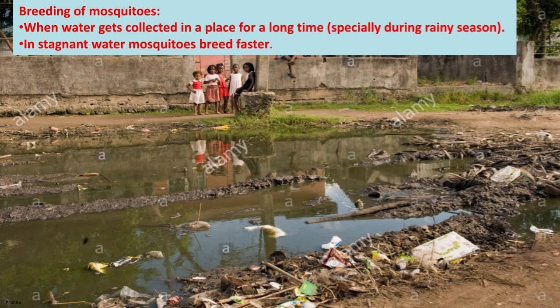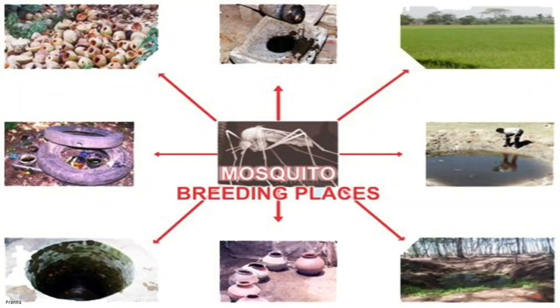Some favourable sites for mosquito breeding are places where water collects for a long time, especially during the rainy season. In stagnant water, mosquitoes breed faster. This picture shows the sizes of mosquitoes and their favourite breeding grounds.